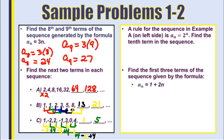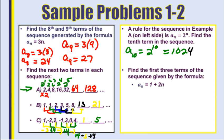For example A, the sequence 2, 4, 8, 16, 32, you can use the rule a subscript n equals 2 to the nth power. To find the 10th term, put 10 in for n: 2 to the 10th power equals 1,024. Looking back, each term is a power of 2 — 2 to the 1st, 2 squared, 2 to the 3rd, 2 to the 4th, 2 to the 5th, and so on. So with base 2, you raise each term number to that power.